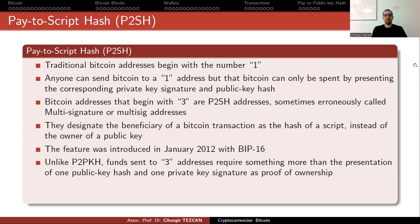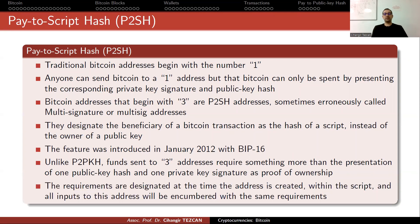Unlike pay-to-public-key hash, funds sent to three addresses require something more than the presentation of one public key hash and one private key signature as proof of ownership. The requirements are designated at the time the address is created within the script, and all inputs to this address will be encumbered with the same requirements.